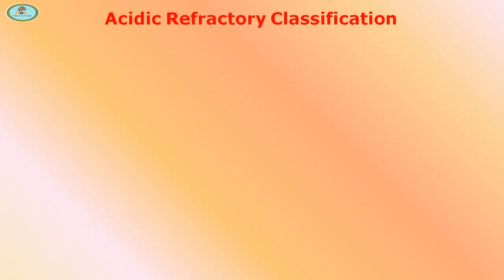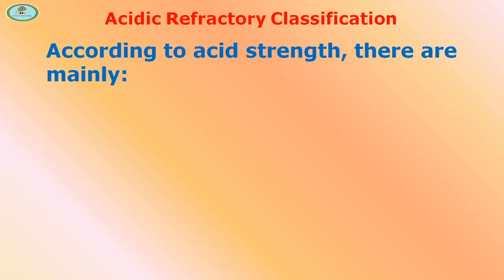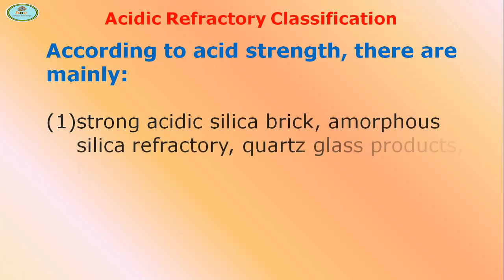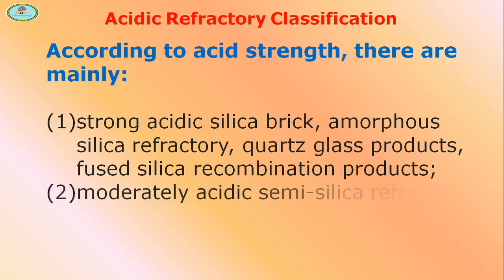Acidic refractory classification: According to acid strength, there are mainly the following types of refractories. First is strong acidic — silica bricks, silica refractory, quartz glass products, and fused silica recombination products. Second is moderately acidic — semi-silica refractory and pyrophyllite refractory.